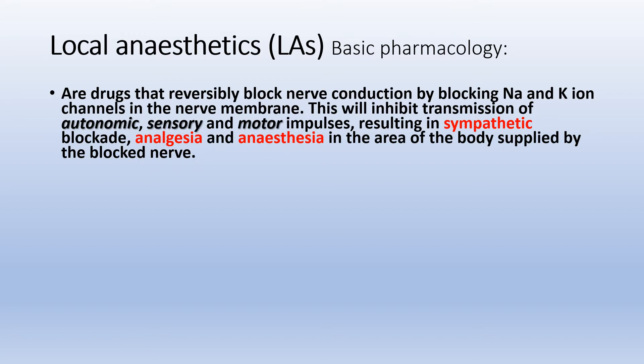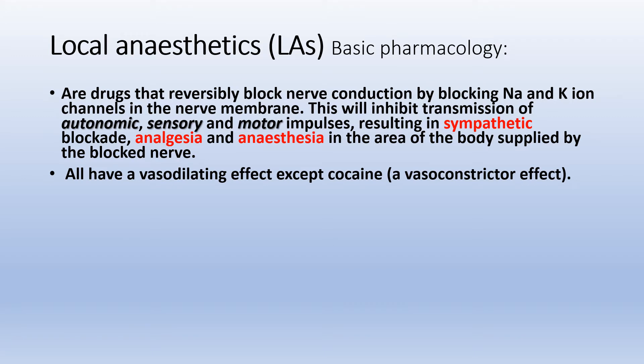Local anesthetics are drugs that reversibly block nerve conduction by blocking sodium and potassium ion channels in the nerve membrane. This will inhibit transmission of autonomic, sensory, and motor impulses, resulting in sympathetic block, analgesia, and anesthesia in the area of the body supplied by the blocked nerve. All of them have a vasodilating effect, except cocaine, which has a vasoconstrictor effect.